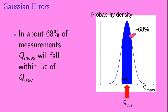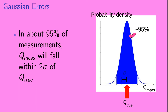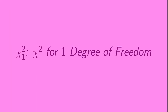This lets us make some interesting statements about how far away q-measured will likely fall from q-true. In about 68% of measurements, q-measured will fall within one sigma of q-true. In about 95% of measurements, q-measured will fall within two sigma of q-true. And in about 99.7% of measurements, q-measured will fall within three sigma of q-true. That was a quick review of Gaussian errors.